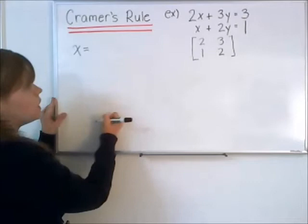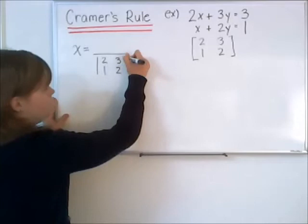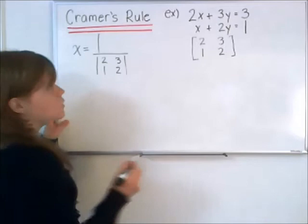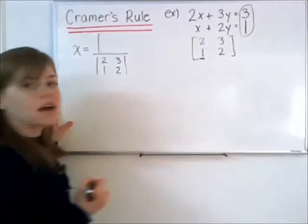First, in finding x, in every case we're going to divide by the determinant of this original coefficient matrix: 2, 1, 3, 2. Then in the numerator, Cramer's Rule says that you take the column corresponding to the x entries, which would be the first column, and replace it with that column.